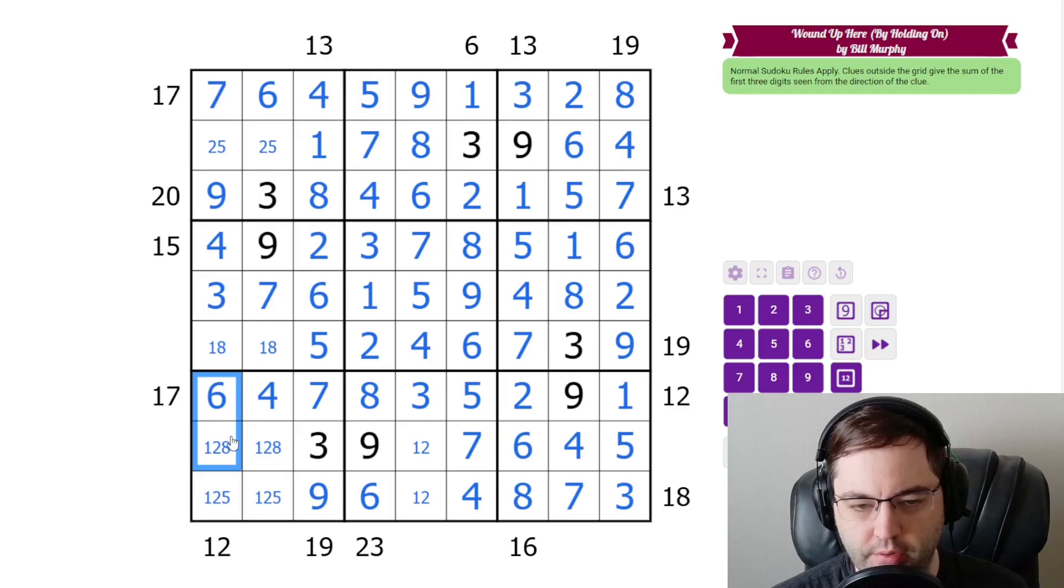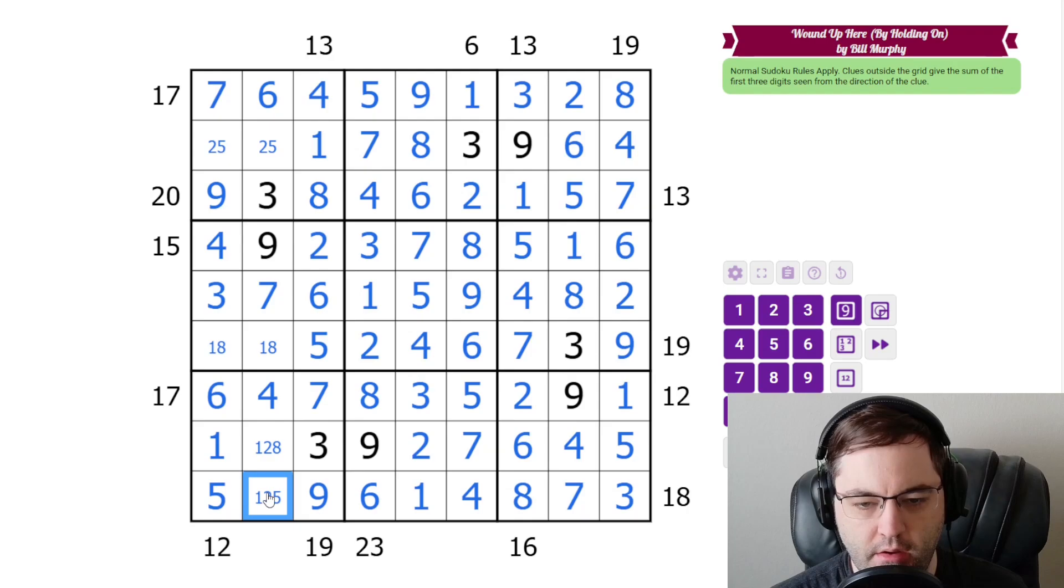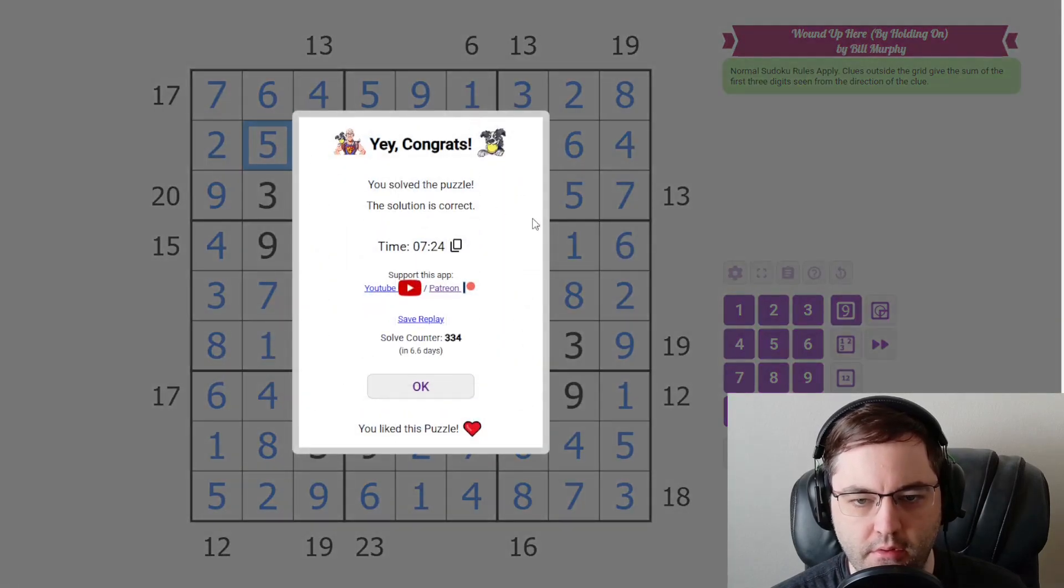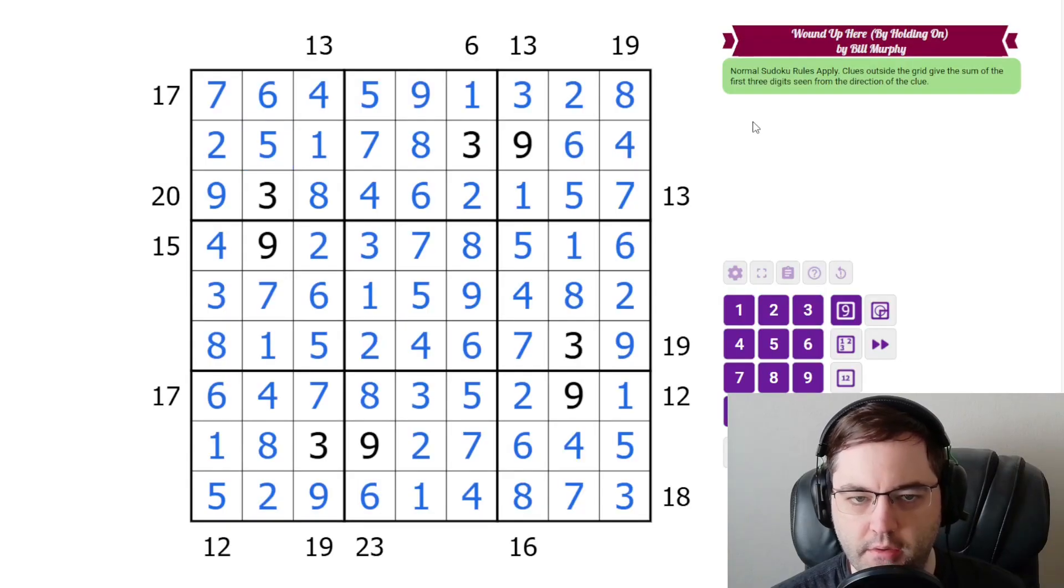We can't have an eight here. That would already give us 14. That's way too much. And a one, two pair is not going to work here with the six. That would only be nine. So this must be five with a one. And that is going to finish it off like so. That's the solution.